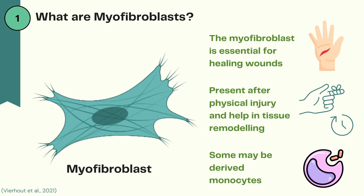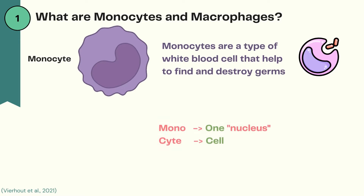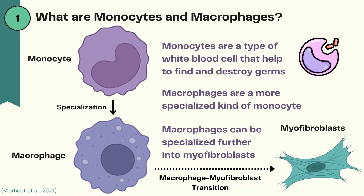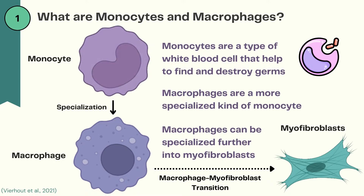The MMT theory suggests that under specific conditions, some myofibroblasts may be derived from monocytes. Monocytes, with mono referring to one nucleus and cyte referring to cell, are a type of white blood cell that helps to find and destroy germs such as viruses and bacteria. These monocytes can be differentiated into macrophages, with macro referring to large and phage referring to eater, which typically occurs when monocytes enter a tissue in our body. From there, macrophages can be further specialized into myofibroblasts, and this is what the macrophage myofibroblast transition theory proposes.